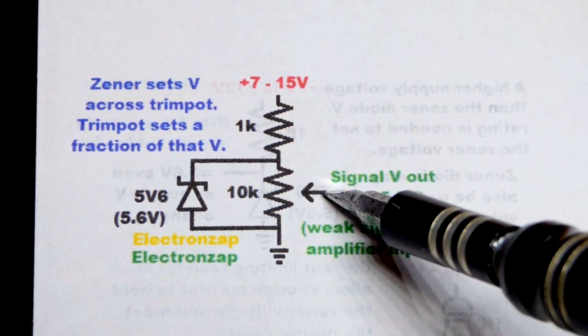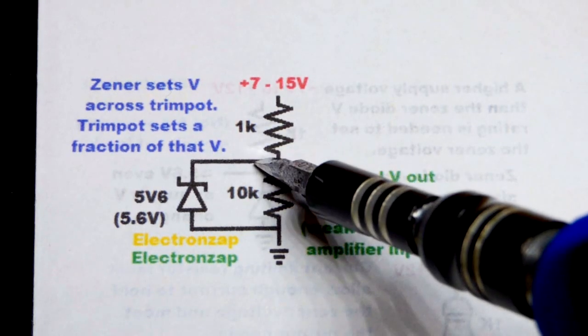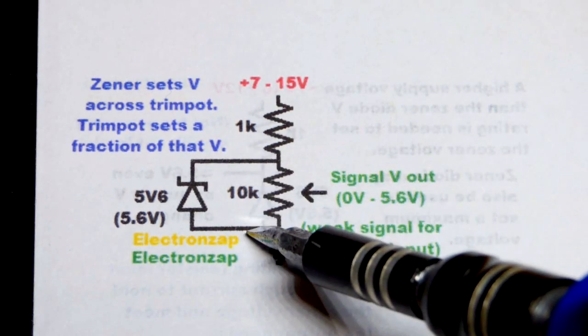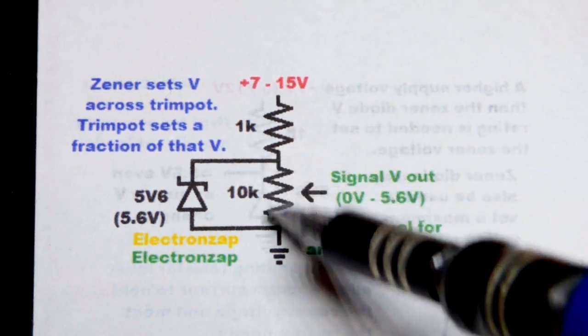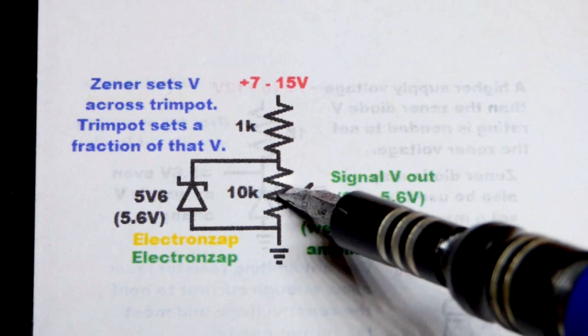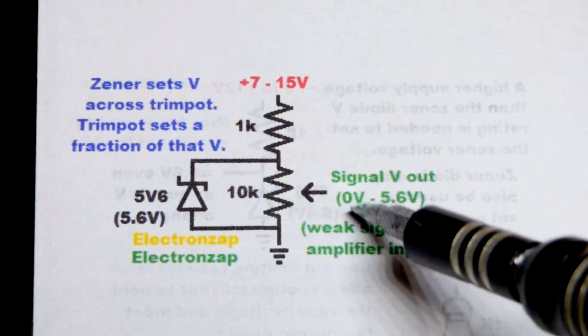So we're going to do something where we don't have that problem, where we put a reference voltage with the Zener diode across it. And then even as the supply voltage changes, we'll still have 5.6 volts across the trim pot there.